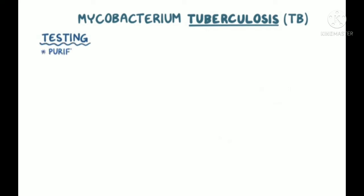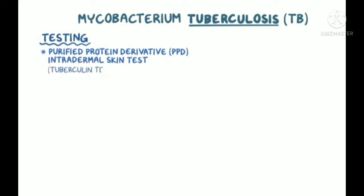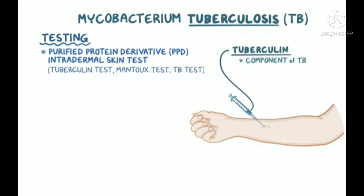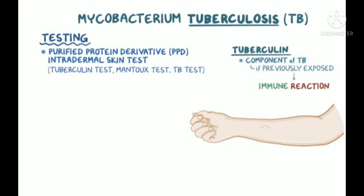Testing for TB often starts with a purified protein derivative, or PPD intradermal skin test, sometimes known as a tuberculin skin test, Mantoux test, or simply TB test. With this test, tuberculin is injected between layers of the dermis. Tuberculin is a component of the bacteria, and if a person has previously been exposed to TB, the immune system reacts to the tuberculin and produces a small, localized reaction within 48 to 72 hours. If the reaction creates a large enough area of induration, rather than just redness, it's considered a positive test.